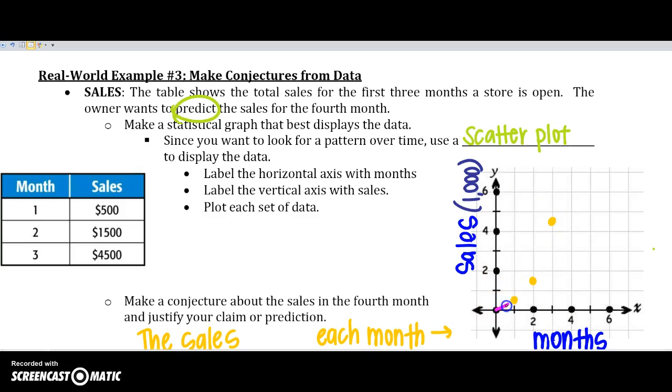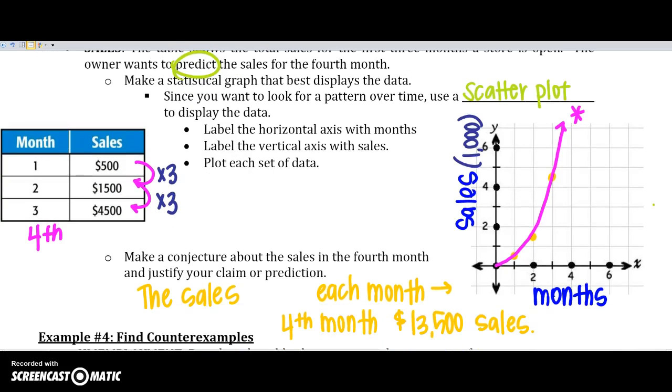Well, I can look at my graph and say, okay, for the fourth month, I'm going to predict that we're probably going to be up here somewhere. But maybe let's look at the graph. So, from $500 to $1,500 and $1,500 to $4,500, what is my fourth month going to look like? Well, I do see that from $500 to $1,500, I can multiply that by three. Let's see if $1,500 to $4,500, that does multiply by three too.